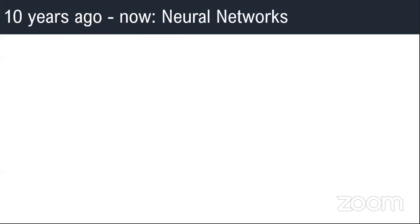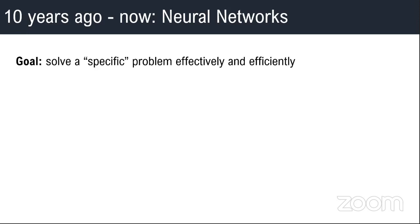So what about today? For the last 10 years, we hear about neural networks — and by that I mean all machine learning, deep learning, all present-day neural networks. Here, the goal is to solve a very specific problem effectively and efficiently. In contrast to symbolic AI, which aimed at general artificial intelligence, present-day neural networks target specific problems.